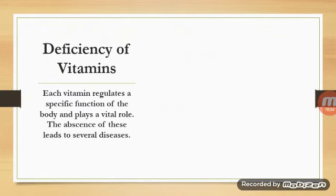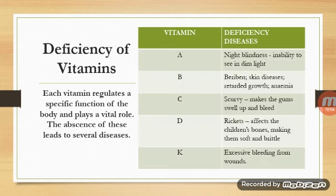Each vitamin regulates a specific function of the body and plays a vital role. Deficiency of Vitamin A leads to night blindness — the inability to see in dim light. Deficiency of Vitamin B causes beriberi, skin disease, retarded growth, and anemia (low hemoglobin level in the blood). Deficiency of Vitamin C causes scurvy, where the gums swell up and bleed.